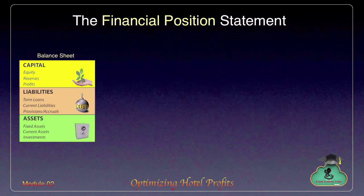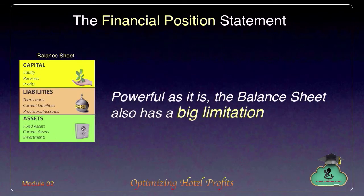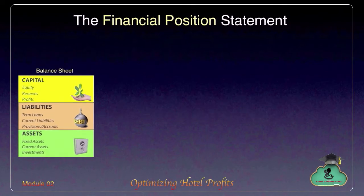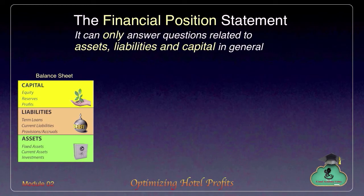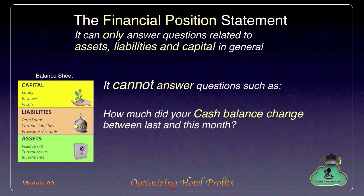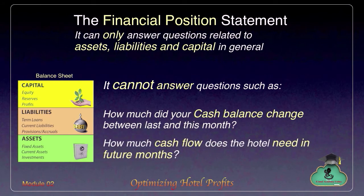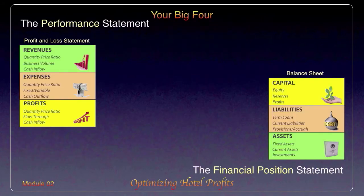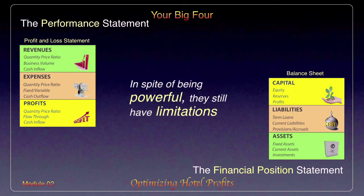Despite its power, the balance sheet also suffers from a big shortcoming. It shows only part of the picture — the financial position in general of the hotel. For example, it cannot tell you how much change took place in your cash balances from various sources between last and this month. It could not tell you what cash flowed in the month, nor what cash flow your hotel might need in the future.